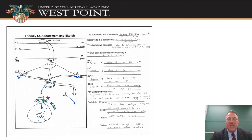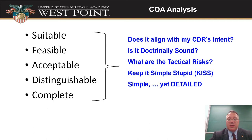Here's an example of what that's going to look like. We'll have a whole other lesson just about how to do our sketch. Once we get our plan together, there are some criteria that all courses of action must meet. Every course of action needs to be suitable, feasible, acceptable, distinguishable, and complete. Does it go with the commander's intent? Is it doctrinally sound? Do we understand the risks? Is it simple enough? Is it different from the other plans? We want to keep things simple but detailed, so we know exactly what's going to happen.